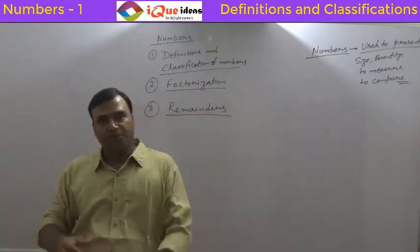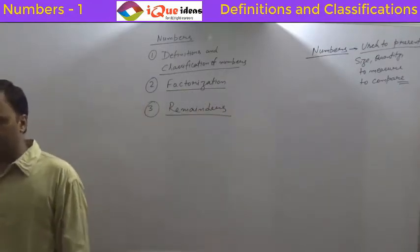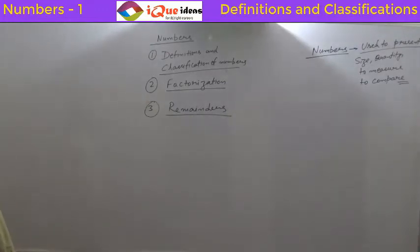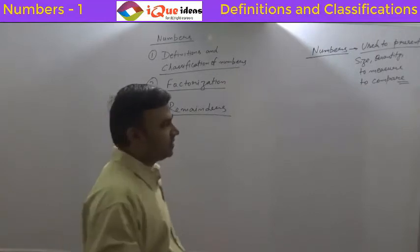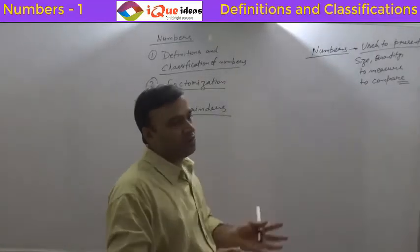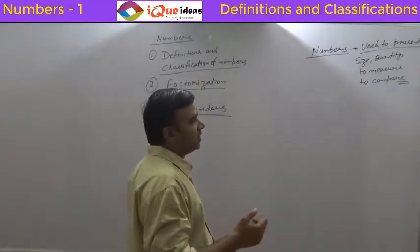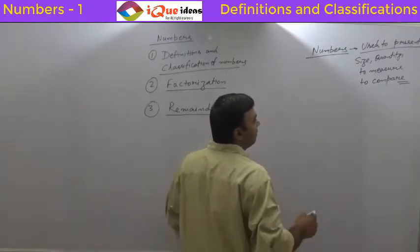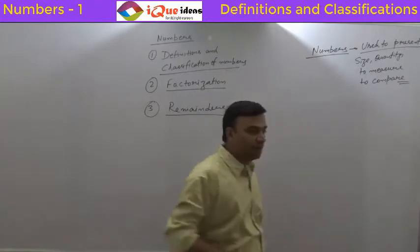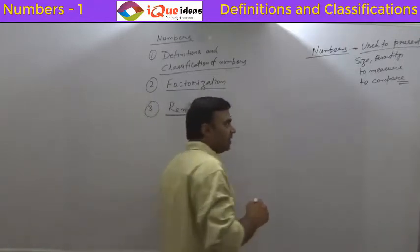Other situations, if a company does some business and you say that they have done profit, how do you calculate? You will use some numbers again. You will find the total revenue, total collection that they have done and the total expenditure. So if the difference is positive, that means there is a profit, or if the difference is negative, we say that there is a loss. So again we are using numbers.